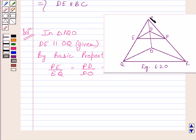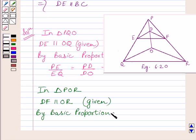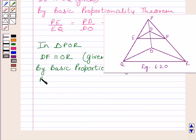Now let us consider triangle POR. In triangle POR, DF is parallel to OR. This is given in the question itself. This implies by basic proportionality theorem, PD upon DO is equal to PF upon FR. Let us name this expression as 2.